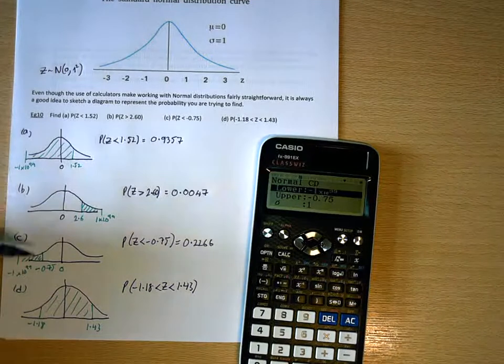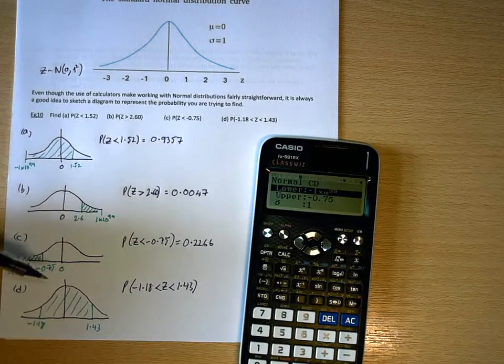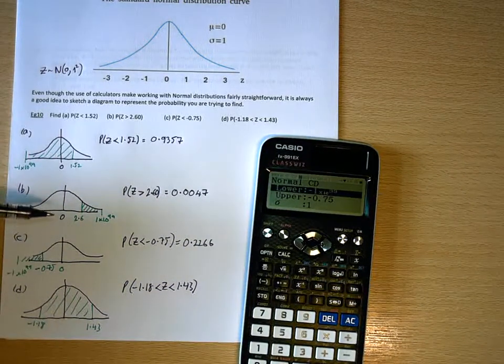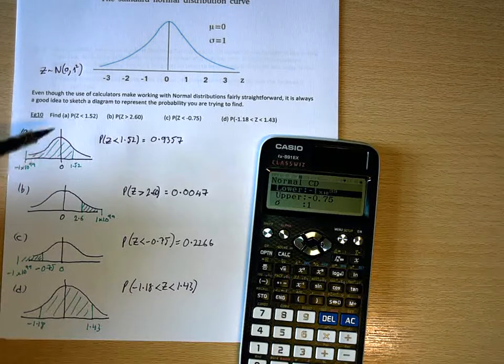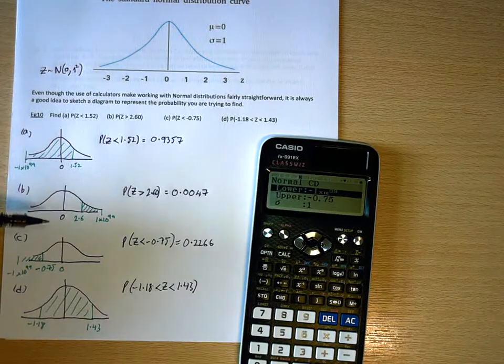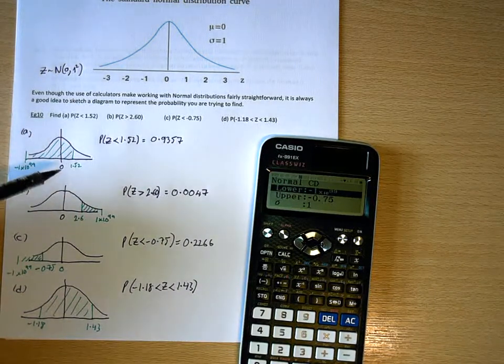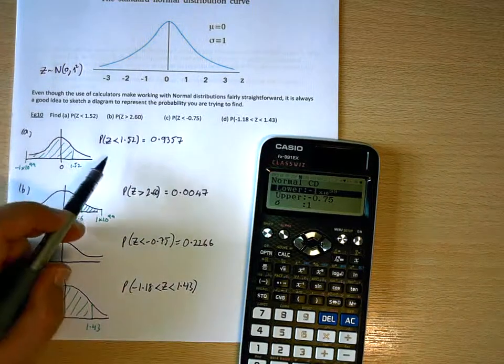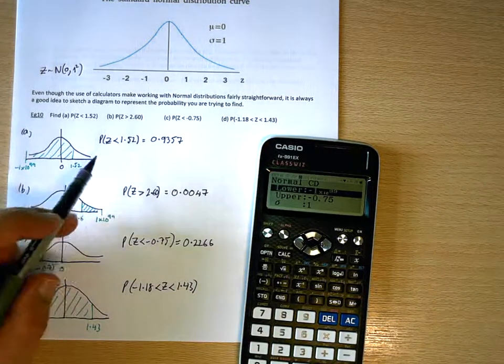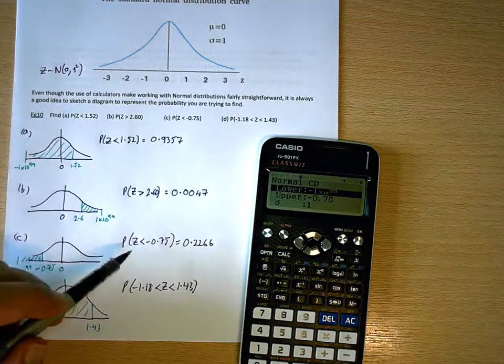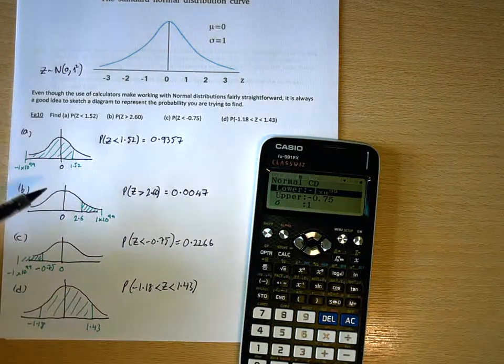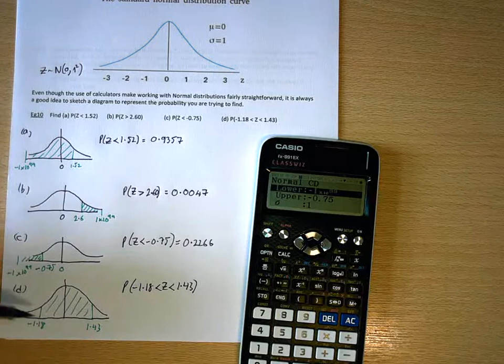Now, with most of these questions, they've become much more straightforward because we can use a calculator. The old look-up tables that you needed to use only gave you values where you've got Z is less than something. So where you're working with greater than or betweens, you had to take the less than away from 1 or from each other.